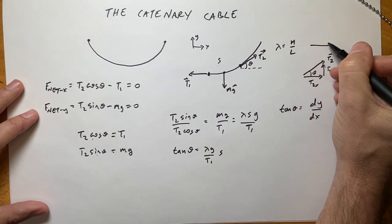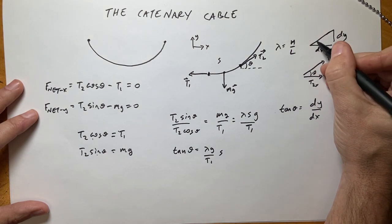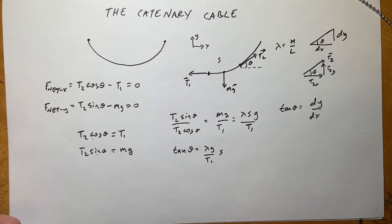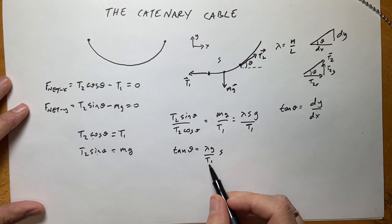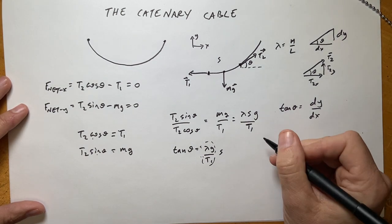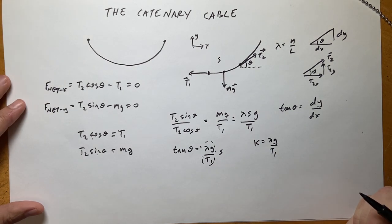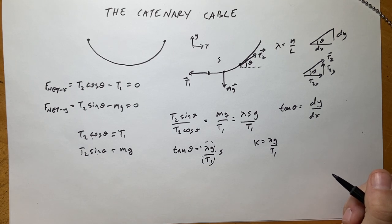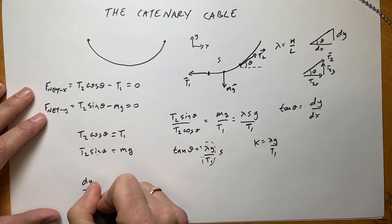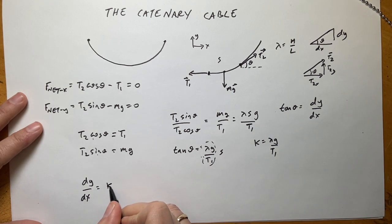The direction of T2 is the same as the slope of the line, so tangent theta is actually going to be the slope, which is the derivative of y with respect to x — dy/dx. So tangent theta is dy/dx, and that can replace theta. I'm also going to call this constant k equals lambda·g over T1, so I get dy/dx equals k times s.